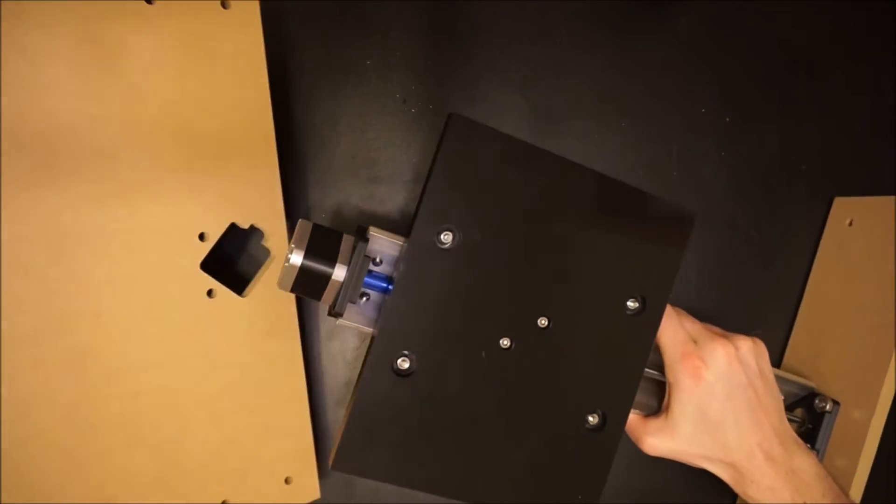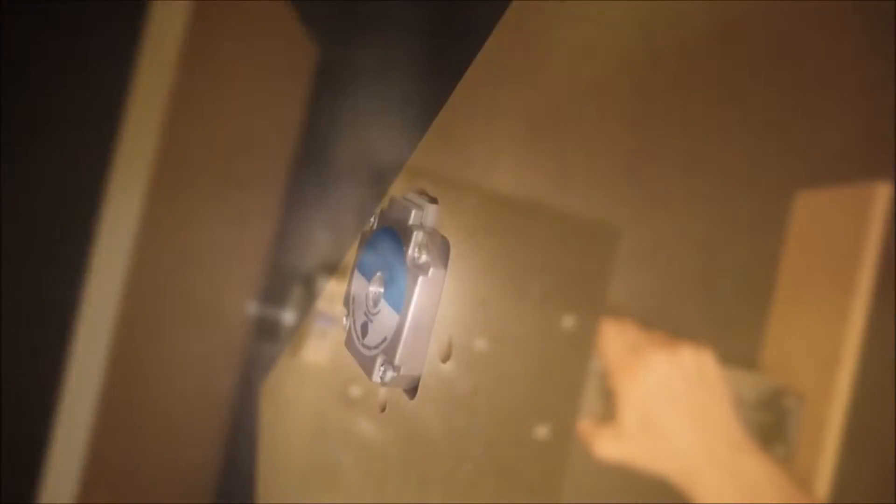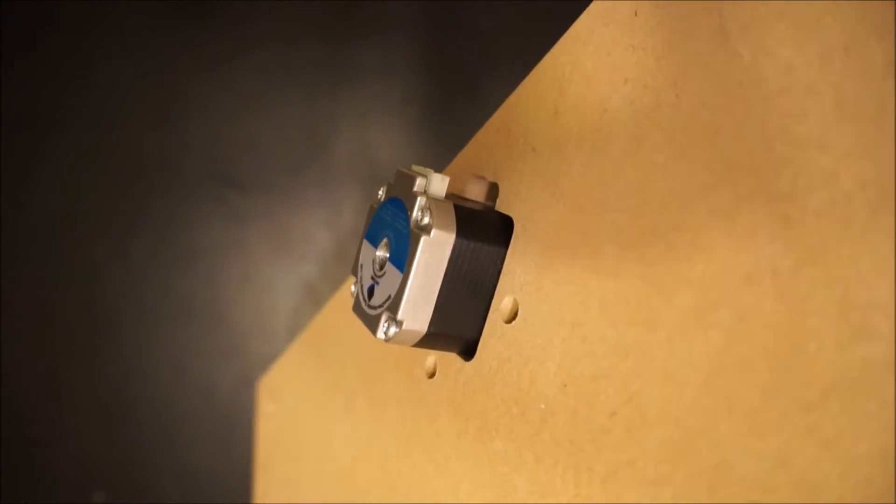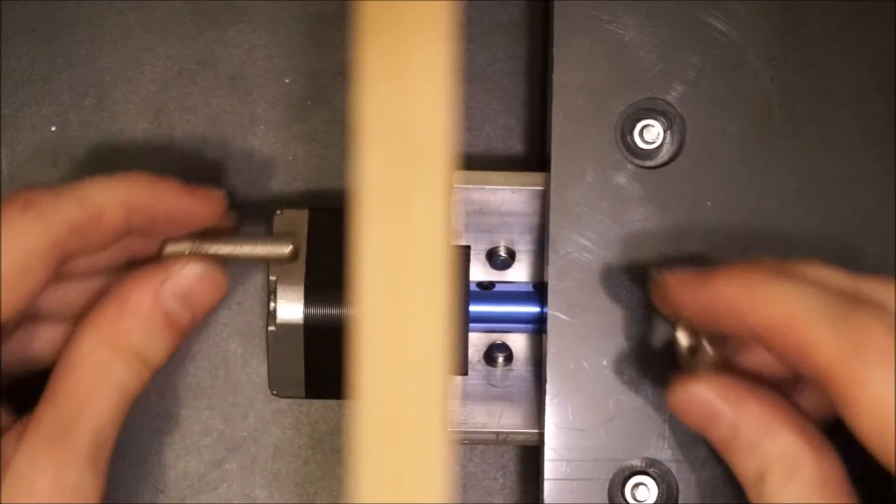Do the same process on the other side, noting that the motor connector tab should pass through its milled spot in the frame piece.